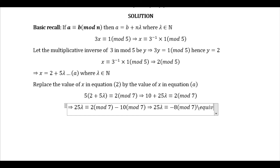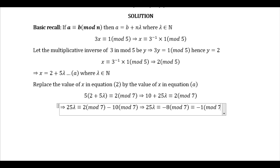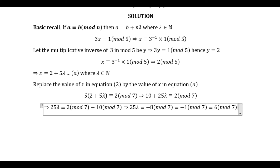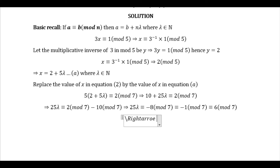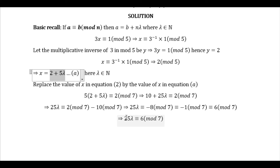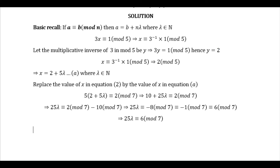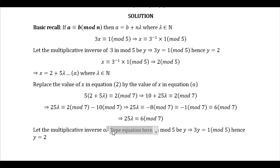Negative 8 mod 7 is the same as negative 1 mod 7, and by adding 7 to it, that is the same as 6 mod 7. So we get 25 lambda ≡ 6 (mod 7). Now we also need to write this in linear form, so we need to find the multiplicative inverse of 25 in mod 7. Let that inverse be y₀.